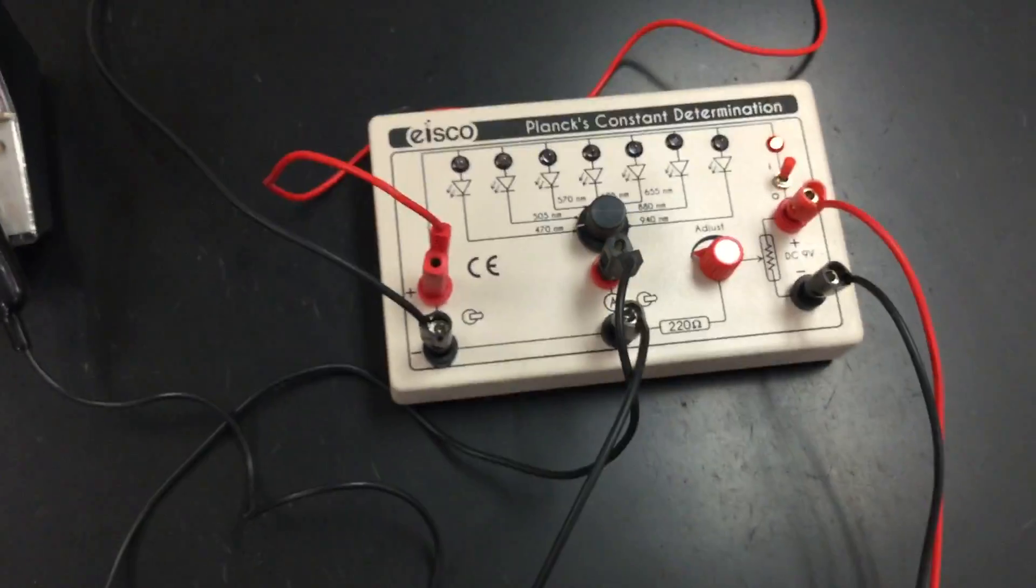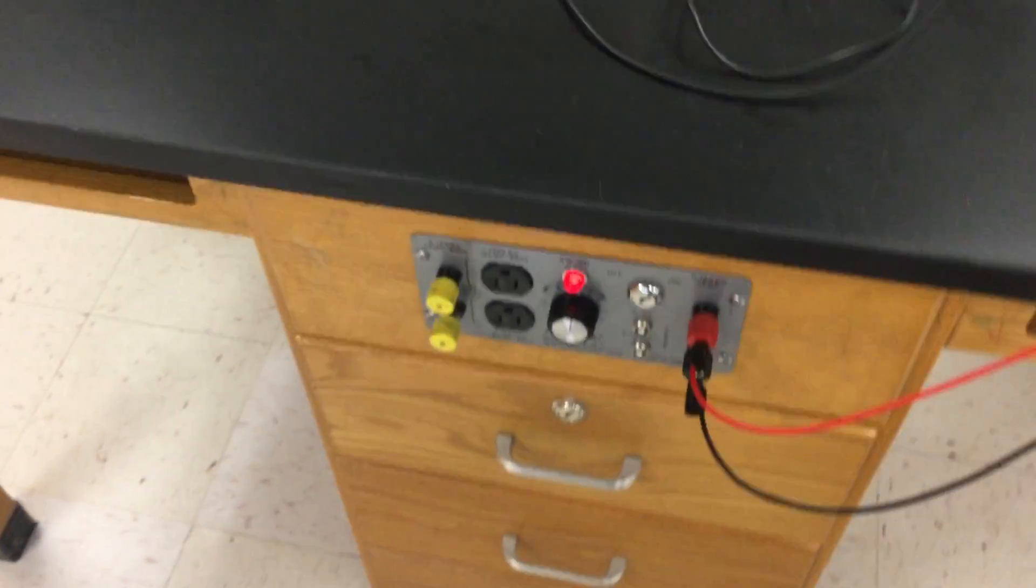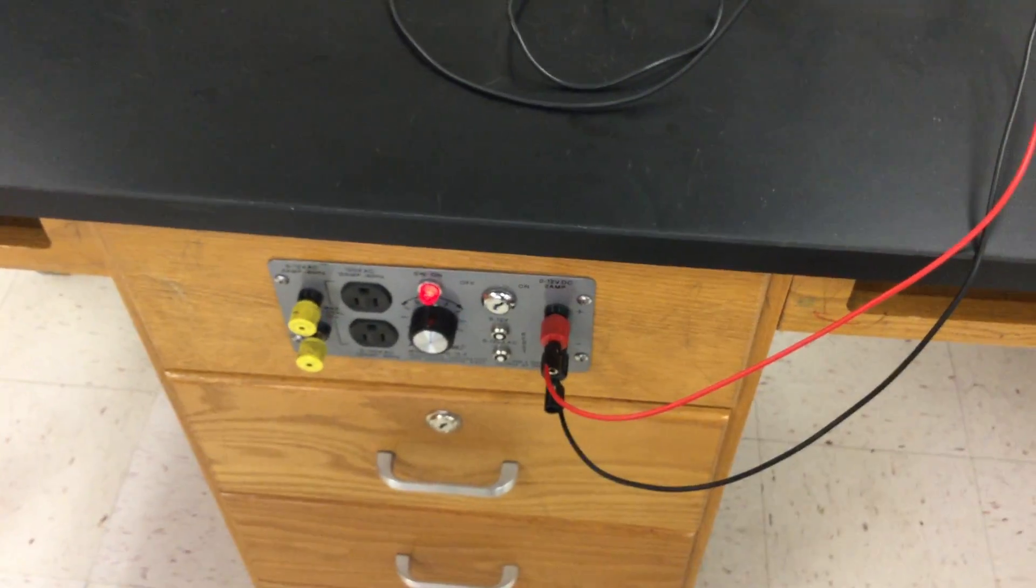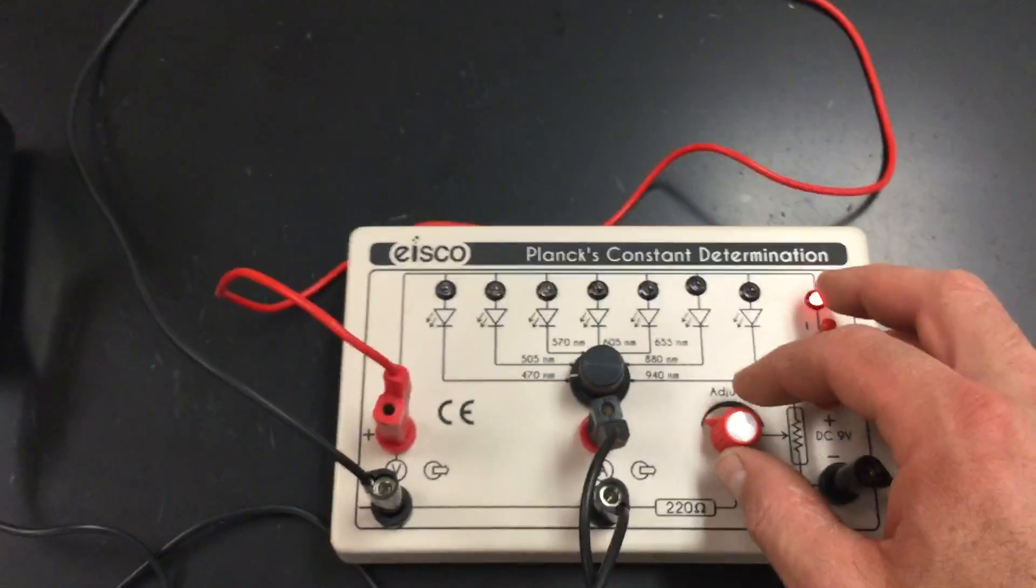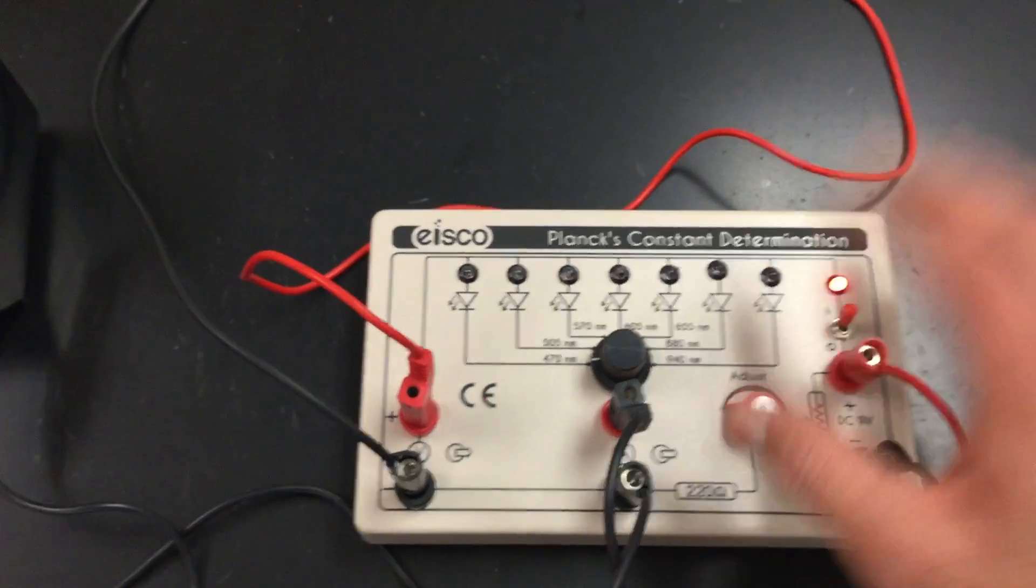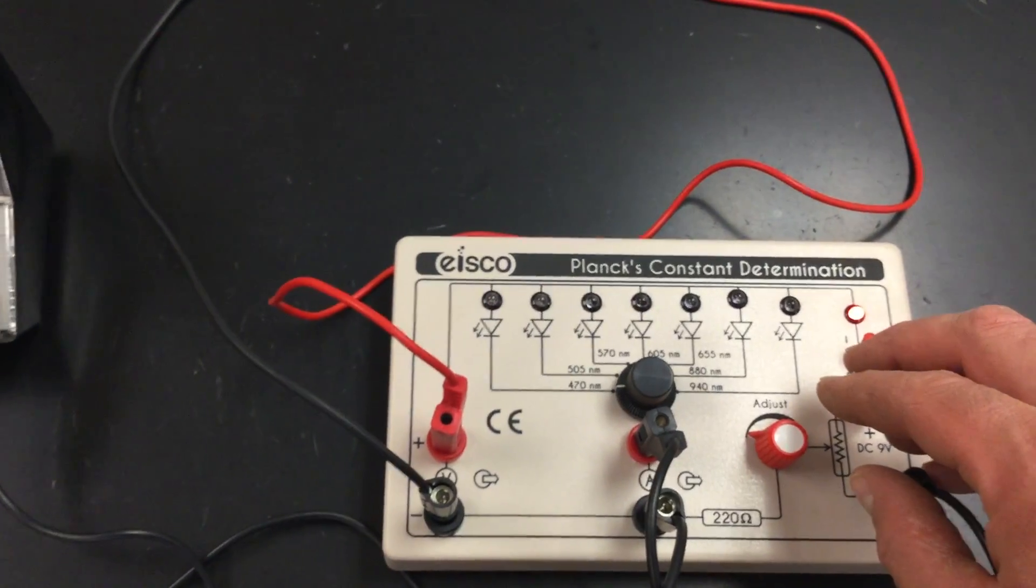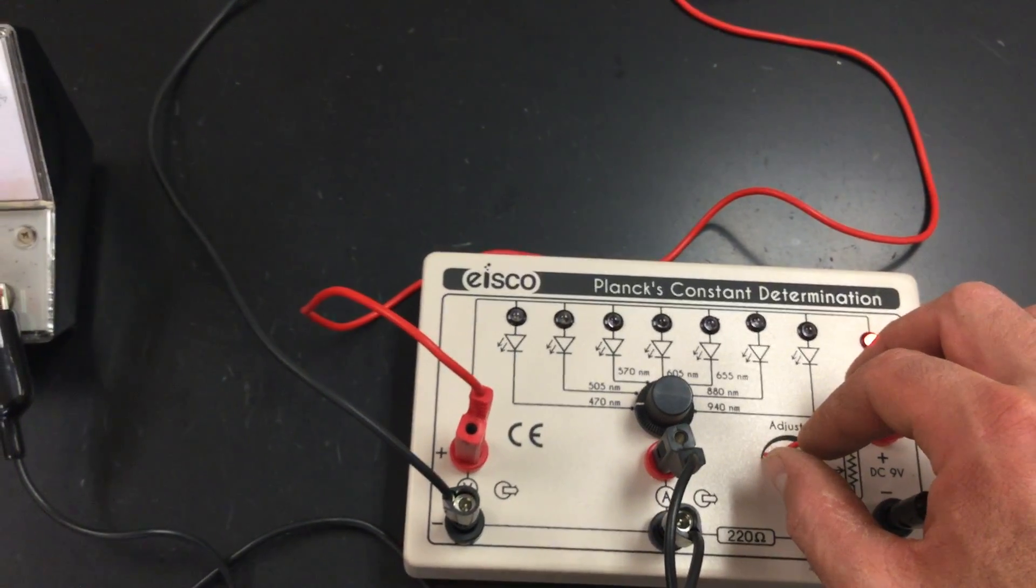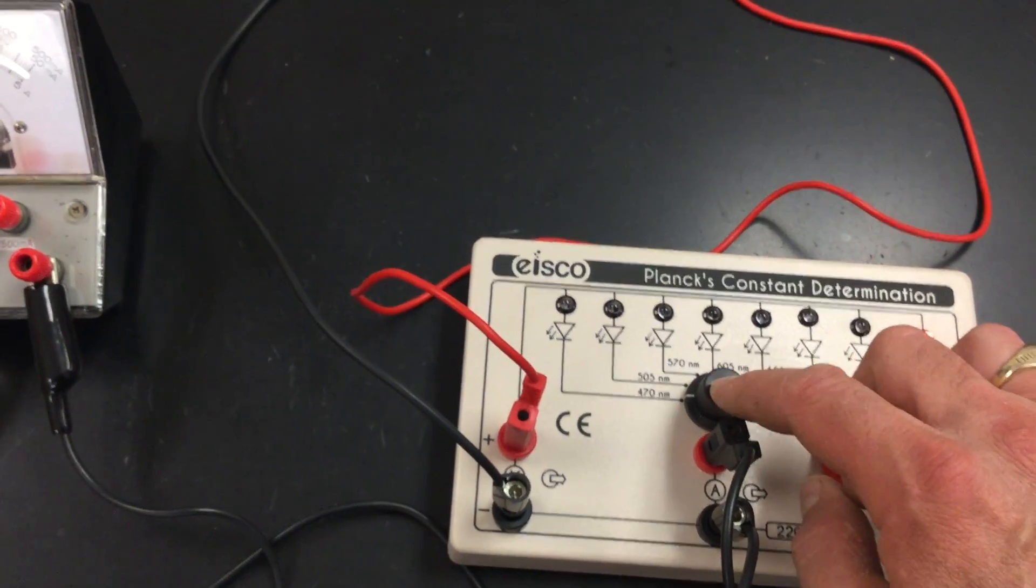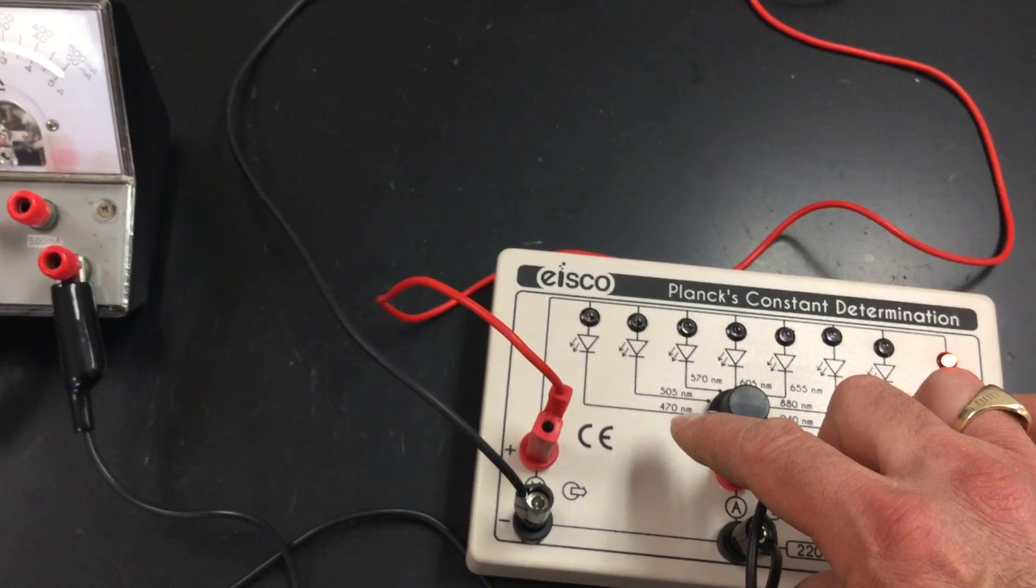So here's the way it works. Right now I have the power supply turned up so it can supply I think I'm at about 9 volts but I'm not going to use all that 9 volts. This knob right here, this red knob, helps me control the voltage. So here's what I'm doing in a nutshell. Electricity is coming into this device and I'm going to supply a little bit of electricity at a time and right now I have this knob set to the 470 nanometer setting.